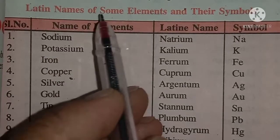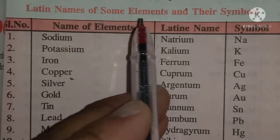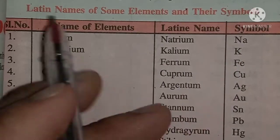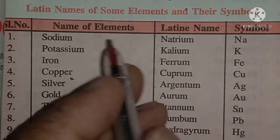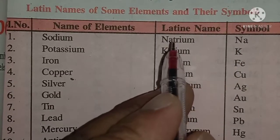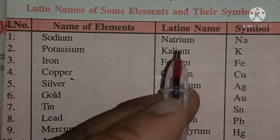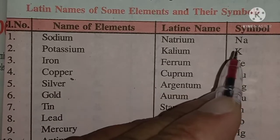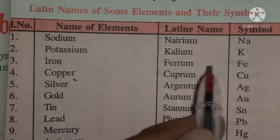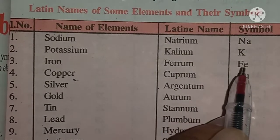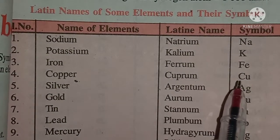In this video we will discuss the names of some elements, their symbols, and their Latin names. Sodium: Latin name Natrium, symbol Na. Potassium: Latin name Kalium, symbol K. Iron: Latin name Ferrum, symbol Fe. Copper: Latin name Cuprum, symbol Cu.